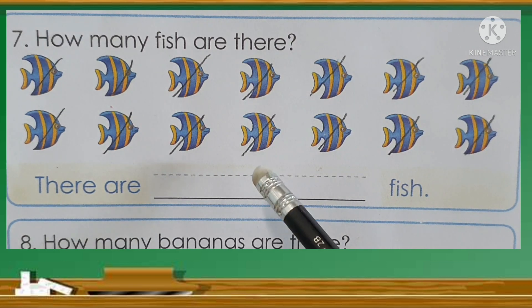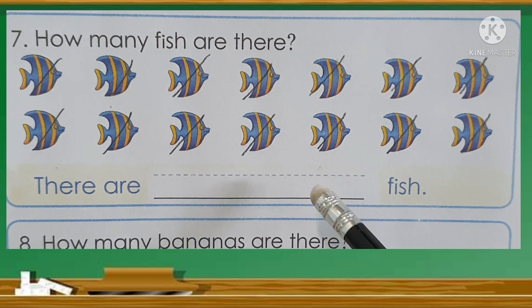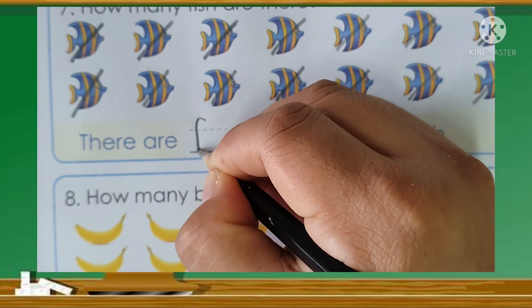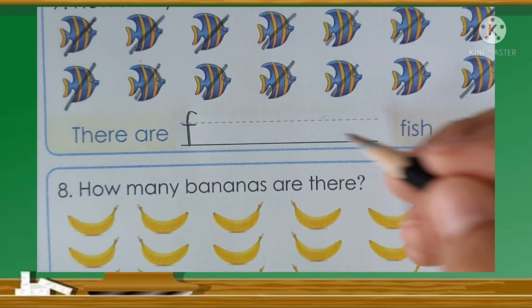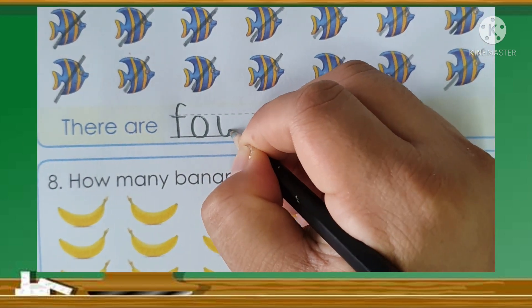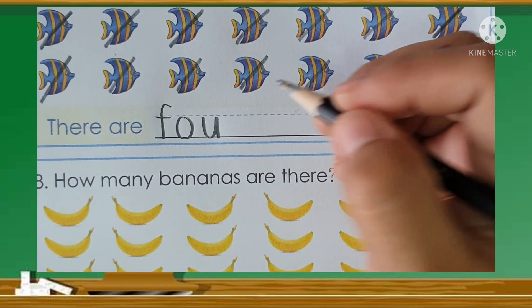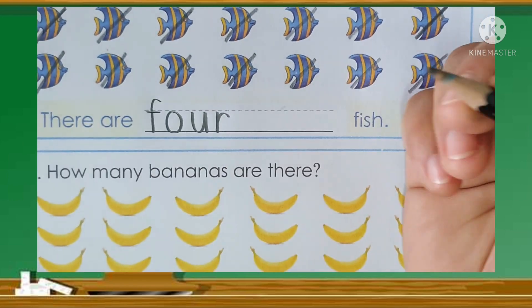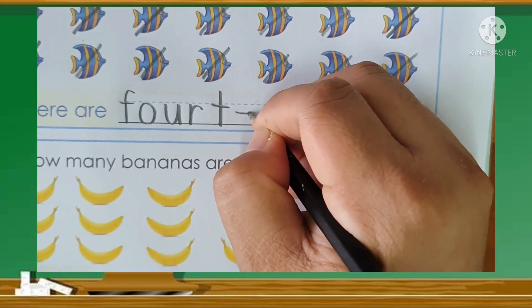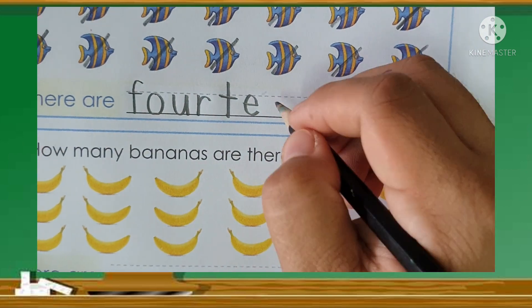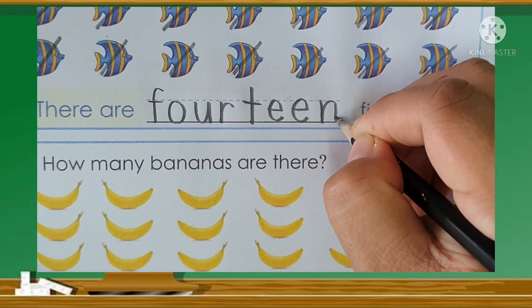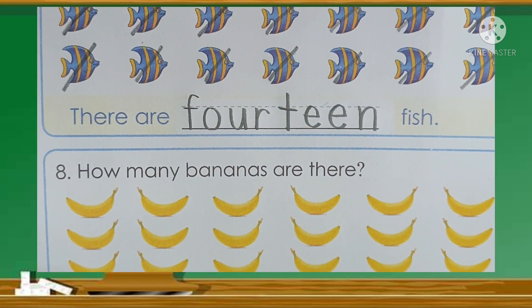There are 14 fish. Now let's write the word 14: F-O-U-R-T-E-E-N. 14. There are 14 fish.